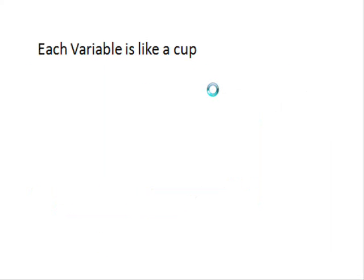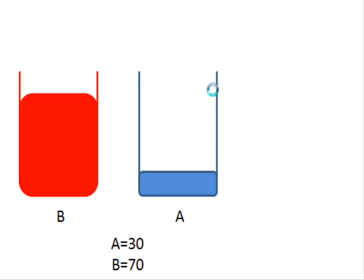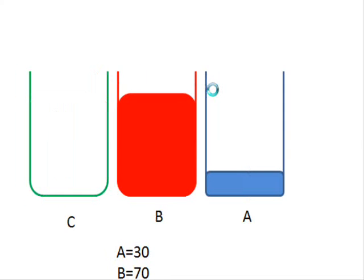First thing, let's assume that each variable is actually a cup. Right now A and B are variables and they are at the same time cups. So here we have A and B. A is 30, B is 70.